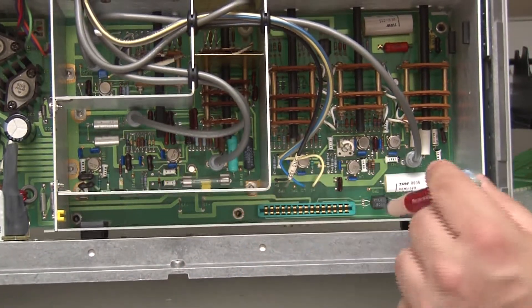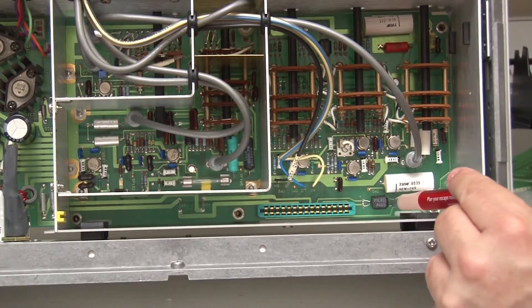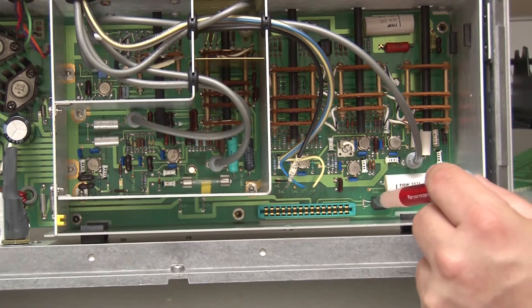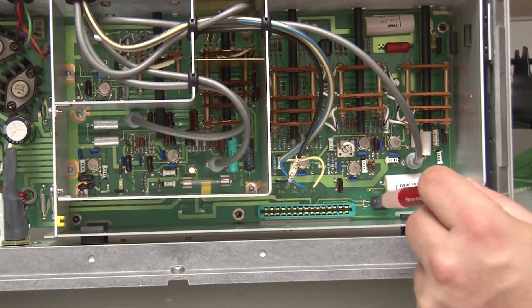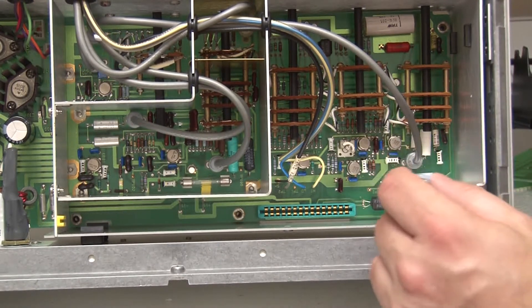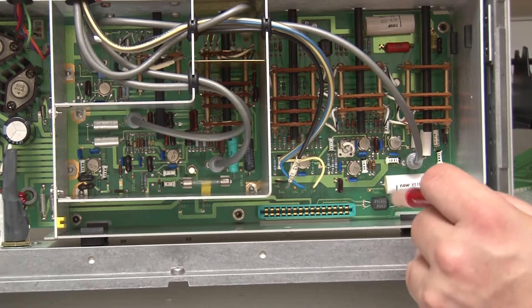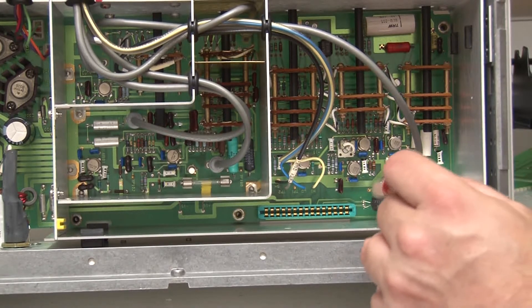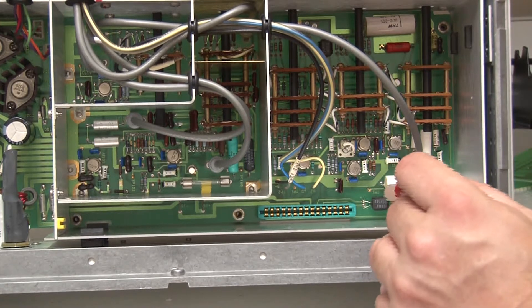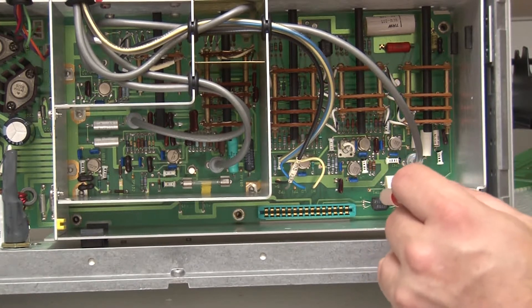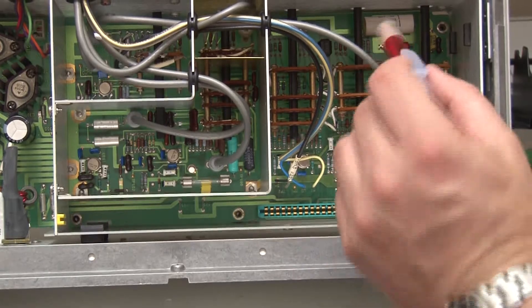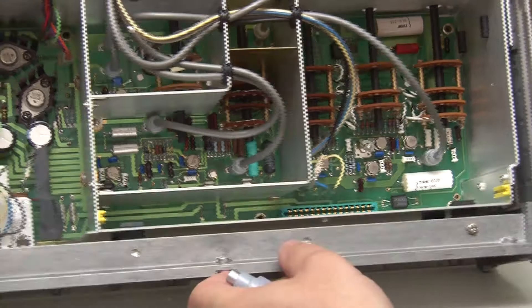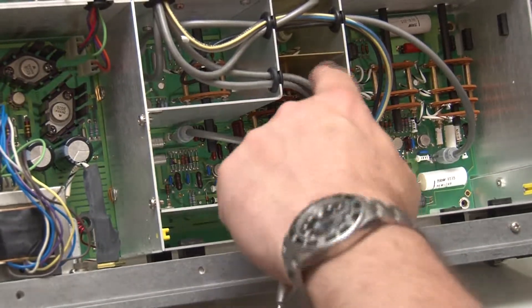That looks like a photocoupled light-dependent resistor. This is typically used in these kind of Wien bridge oscillator circuits to deal with controlling the gain, the kind of voltage-controlled amplitude circuit. That's what I'm guessing that probably is. Oh, there's actually two of them. There's another one in there. There's another one right in there. What else have we got in here?